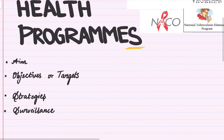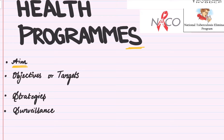Every national health program has an aim. For example, if we are targeting a communicable disease, the aim is basically to eliminate or eradicate that specific communicable disease.